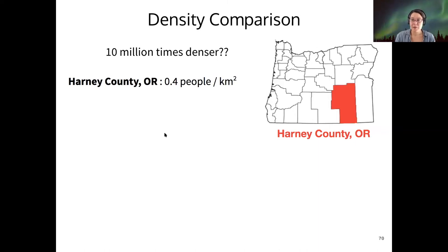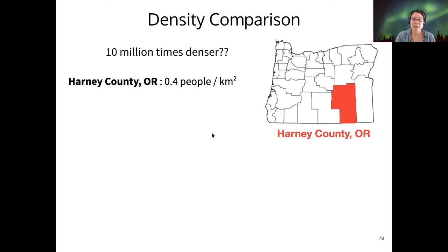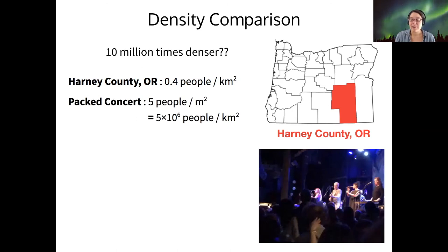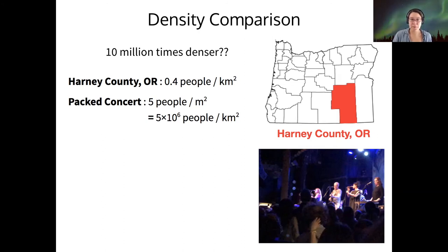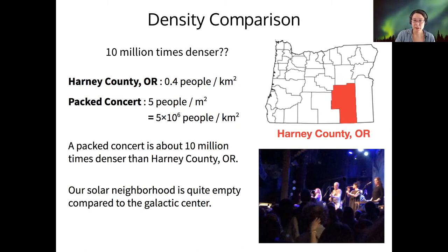I'm going to make this comparison using population density. Harney County in eastern Oregon has about 0.4 people per square kilometer. For comparison, let's say we want to go to a really crowded place — maybe a concert. In a really packed concert environment, you might have up to five people per square meter. If I convert that to people per square kilometer, I get 5 million. So a packed concert venue is about 10 million times denser than Harney County — that's your 10 million times denser.